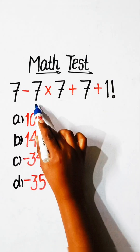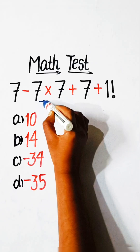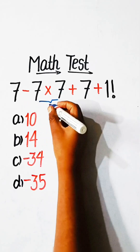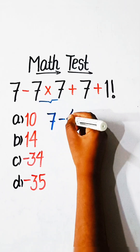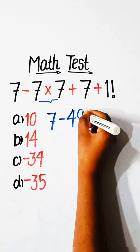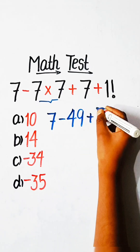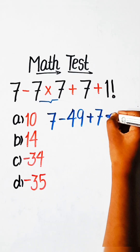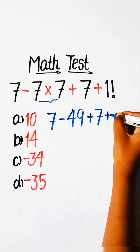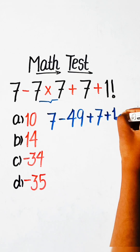In this equation, first of all we have to solve the multiplication. So we will write here 7 minus 7×7, which is 49, plus 7 plus 1 factorial. The value of 1 factorial equals 1, so we write 1.